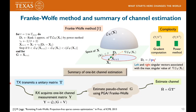To summarize the 1-bit channel estimation procedure: first, the transmitter transmits a unitary matrix T; the receiver acquires measurement block Y; and finally, you can use either projected gradient ascent or the Frank-Wolfe method to estimate the pseudo-channel G. Once the pseudo-channel is estimated, channel estimation becomes a trivial problem.